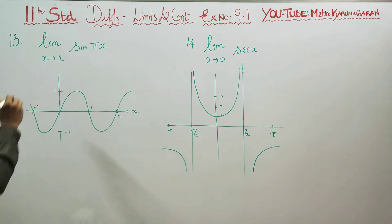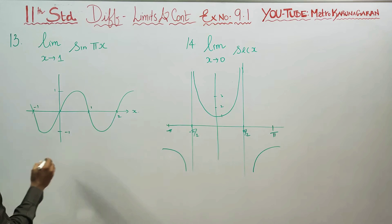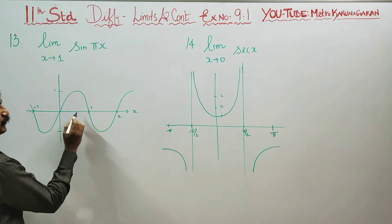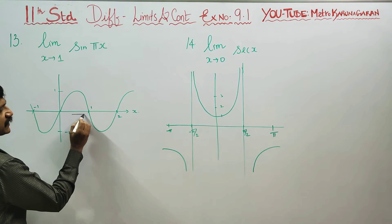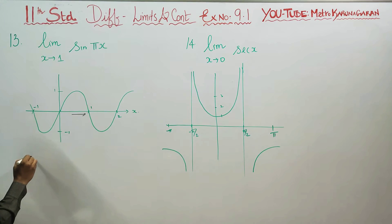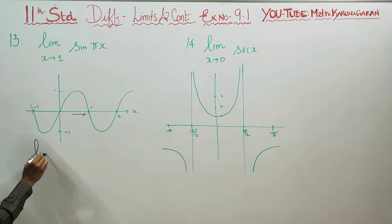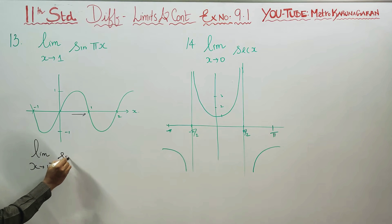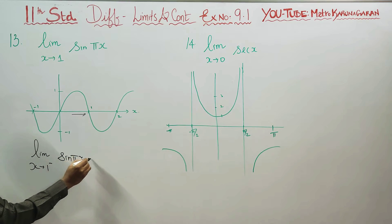When x turns to 1, first of all we consider the left side limit. When x turns to 1 minus, sin(πx) is the left limit.